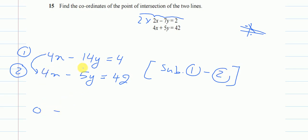Minus 14 minus plus 5, so minus 14 minus plus 5 will give me minus 19. And 4 minus 42 will give me minus 38.